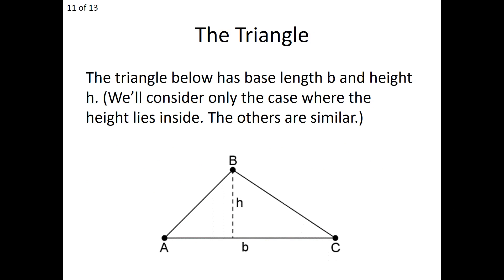We start with triangle ABC. The dimensions we'll use are the base and the height. We've chosen AB to be the base B, and the height comes from the opposite vertex C, giving length H. We're going to find our area formula in terms of B and H, representing the area of triangle ABC. We'll use the case where the altitude is on the inside, and the other cases — height along the side or on the outside — are similar, approached by constructing a parallelogram and using our parallelogram information.